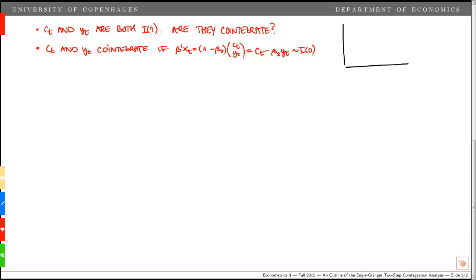Visually this means that we have the two variables, it could look something like this, yt and ct. Individually these two are unit root processes, but there exists a linear combination which could look something like this. So this is a linear combination beta prime xt which is i0, so that the stochastic trends in the two variables cancel out, and beta prime xt defines the deviation from the long-run equilibrium given by the cointegration relation.